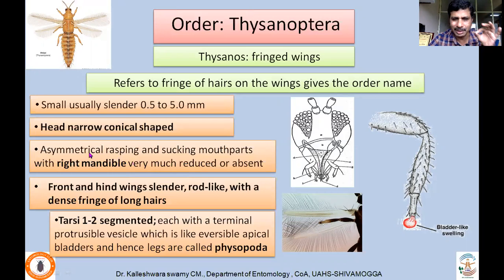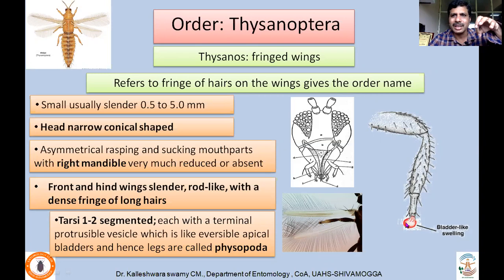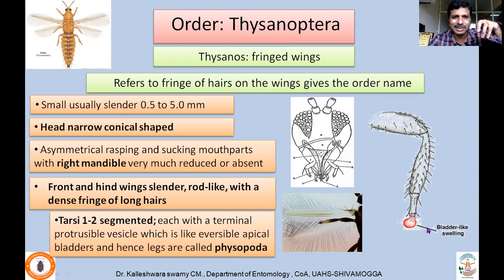The fore and hind wings are slender, rod-like, with dense fringes of long hairs — that is how they got the name Thysanoptera. The tarsi are one- to two-segmented, each with a terminal protrusible vesicle, like an eversible apical bladder. Because of this bladder-like swelling, thrips are also called Physopoda — 'physo' meaning swollen and 'poda' meaning leg — referring to this bladder-like swelling at the terminal part of the tarsi.